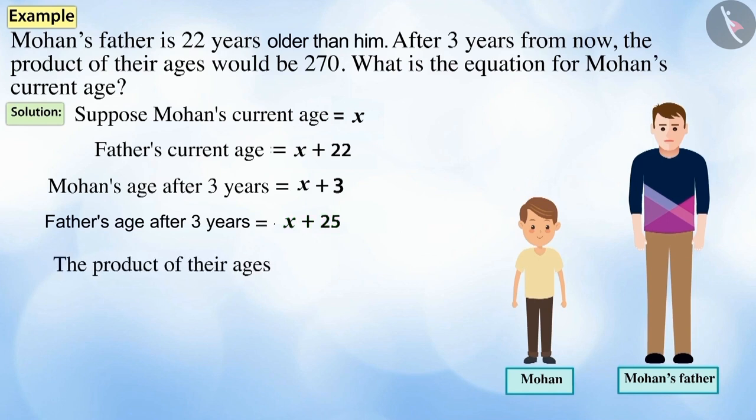Therefore, the product of their ages equals (x + 3) times (x + 25). Upon solving it, 270 = x² + 28x + 75.